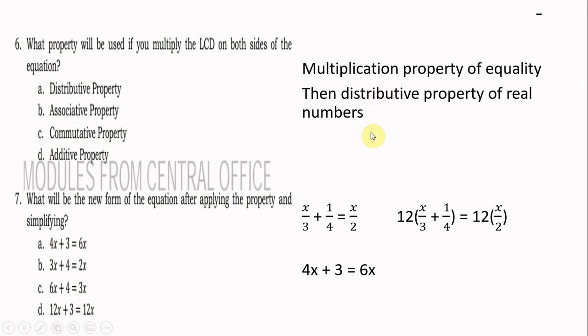Number 6: What property will be used if you multiply the LCD on both sides of the equation? That is the multiplication property of equality. After applying the multiplication property of equality, we will then apply the distributive property of real numbers.